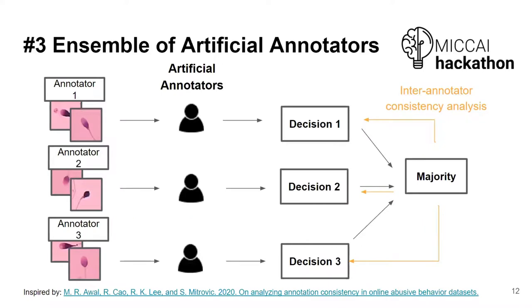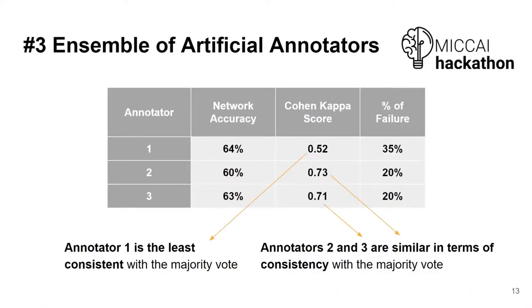Finally, we have an ensemble of artificial annotators. In this network, we train different classification networks, each corresponding to one annotator and trained with data from that annotator. The intuition was to obtain labels produced by different simulations of the annotators. With this method, we again found that the first annotator is the least consistent one.